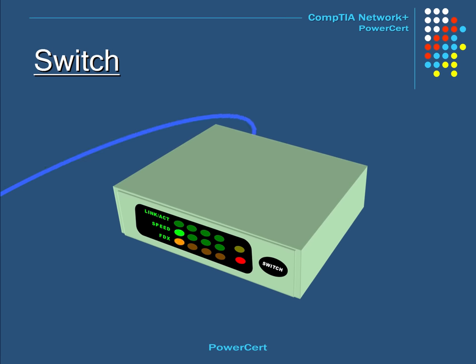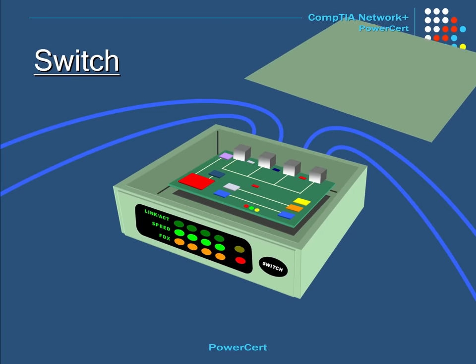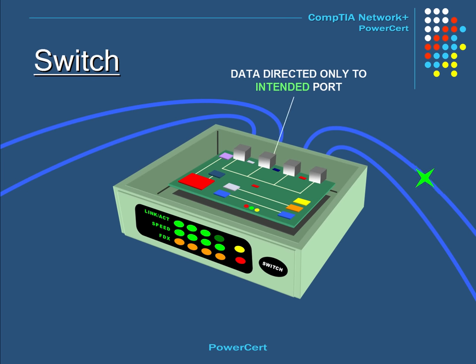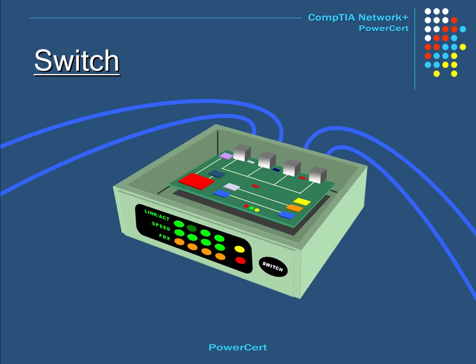A switch is very similar to a hub — it also has multiple ports that accept Ethernet connections from network devices. But unlike a hub, a switch is intelligent. A switch can learn the physical addresses of the devices connected to it and stores these addresses in a table. When a data packet is sent to a switch, it directs it only to the intended destination port. That is the major difference between a hub and a switch, and as a result, switches are far more preferred over hubs because they reduce unnecessary traffic on the network.